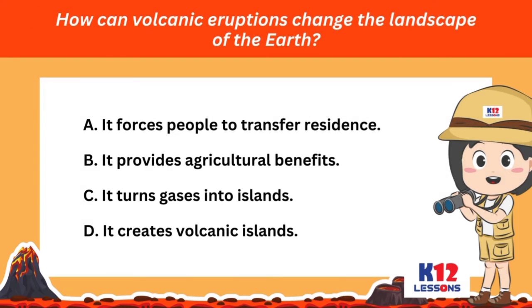How can volcanic eruptions change the landscape of the earth? A. It forces people to transfer residents. B. It provides agricultural benefits. C. It turns gases into islands. D. It creates volcanic islands.